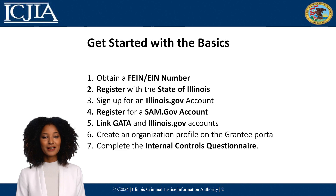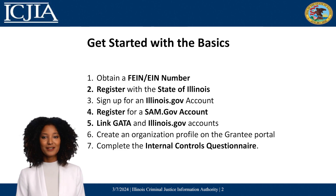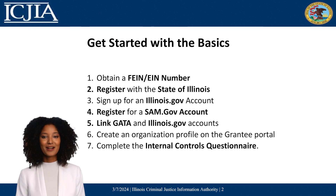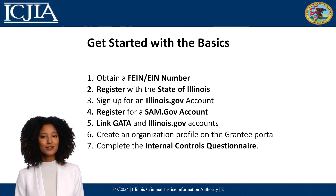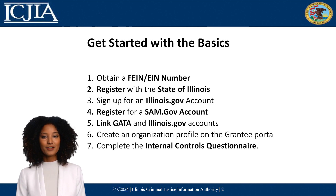We'll explain how to get your Federal Employer Identification Number, register on Illinois.gov, SAM.gov, and GATA accounts. We will cover how to set up an organization profile on the Grantee Portal and fill out the Internal Controls Questionnaire, a key part of submitting a grant.